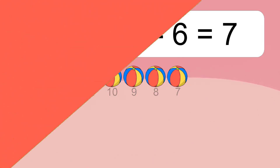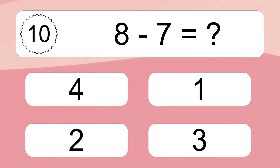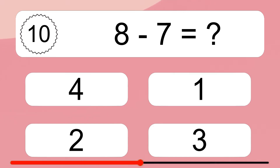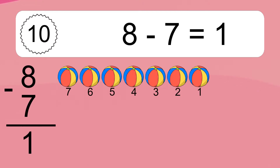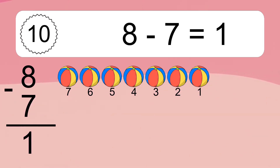8 minus 7 equals what? 8 minus 7 equals 1. Let's count it: 7, 6, 5, 4, 3, 2, 1.